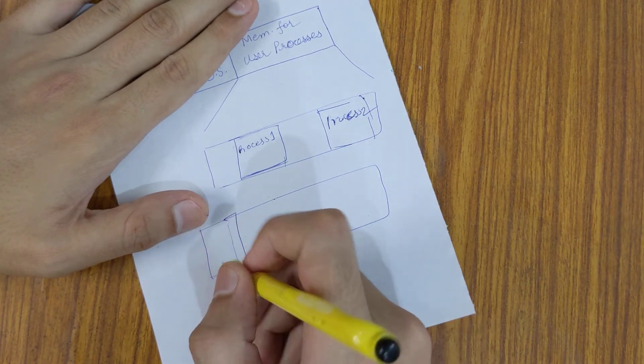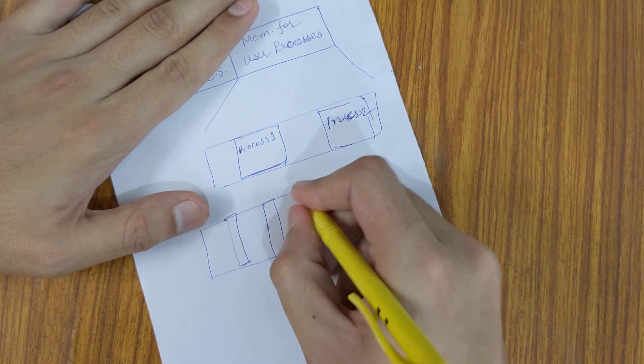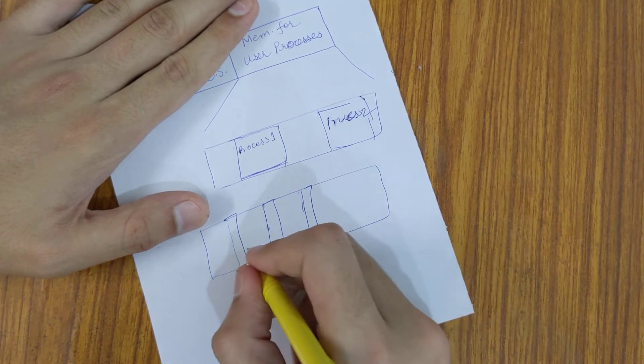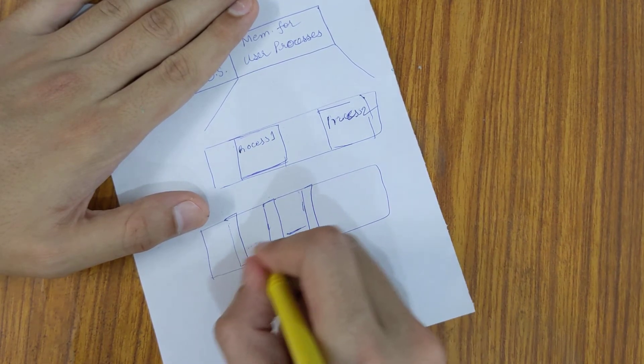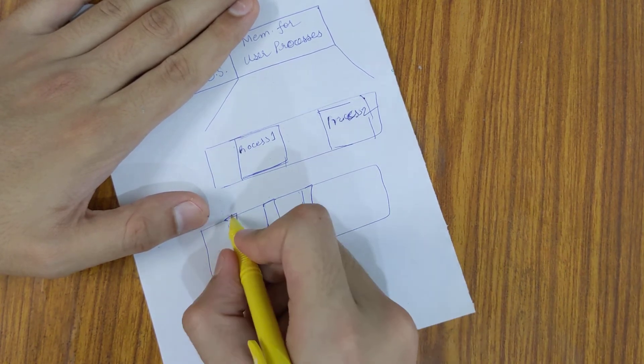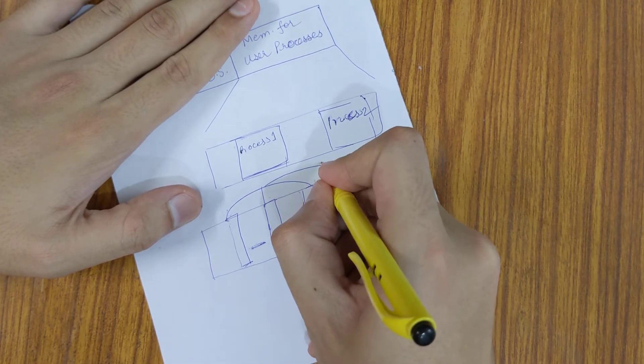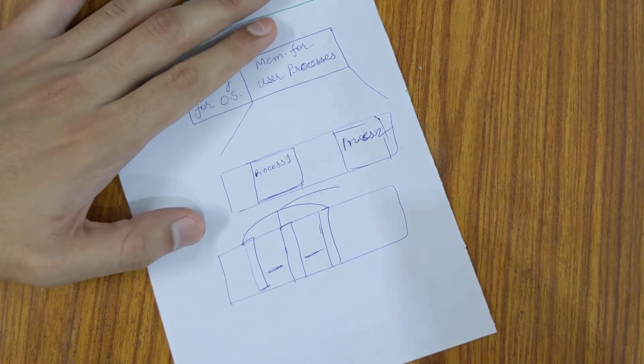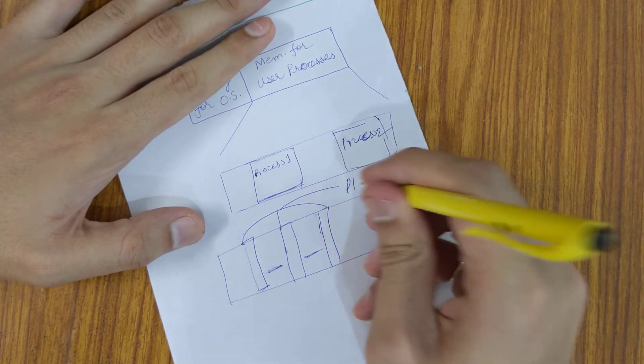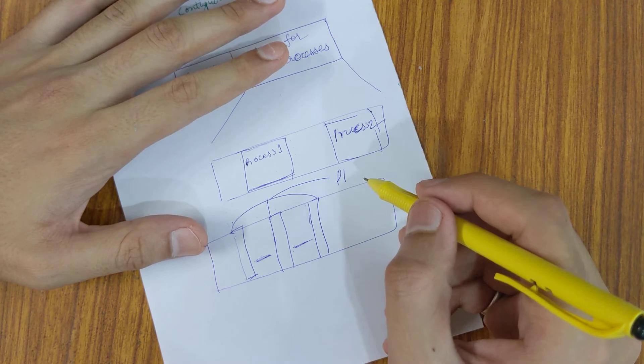allocated like this in chunks, so there are gaps in between. So here, all of this memory is for P1, so this is non-contiguous memory allocation.